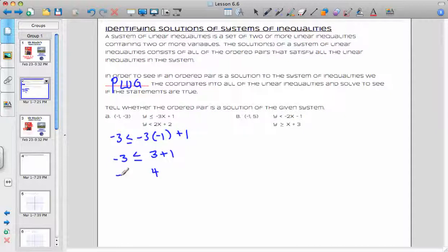Negative 3 is less than or equal to 4. And yes, it is. So, so far, so good.